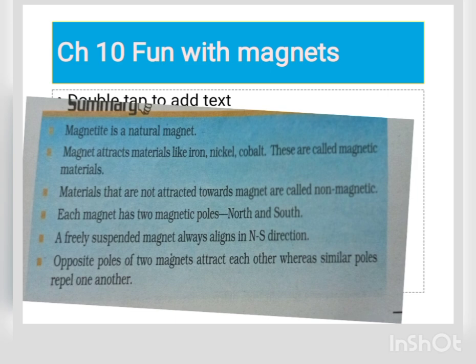Each magnet has two magnetic poles. Just like an electric cell has two terminals — positive and negative — a magnet has a north pole and a south pole. No magnet has only one pole; you will always find two poles. And one more interesting thing: if you break a magnet thinking you can separate the north pole from the south pole, that will never happen. Each piece will again have both a north pole and a south pole. Every magnet, big or small, has two poles.